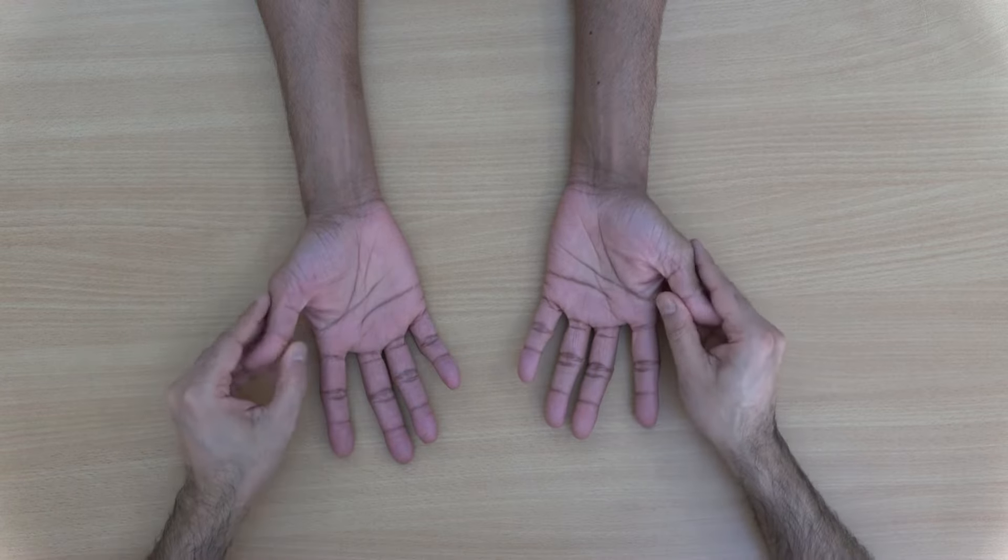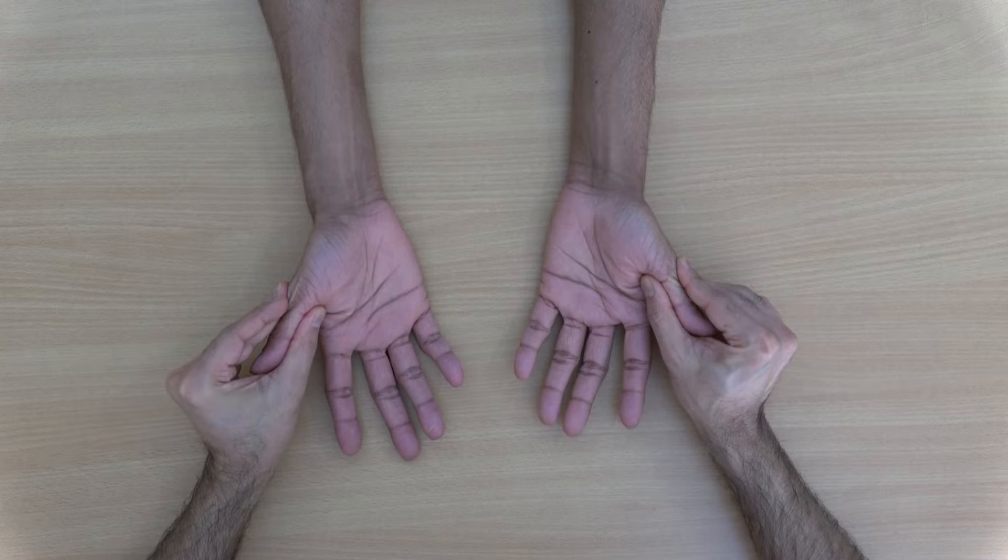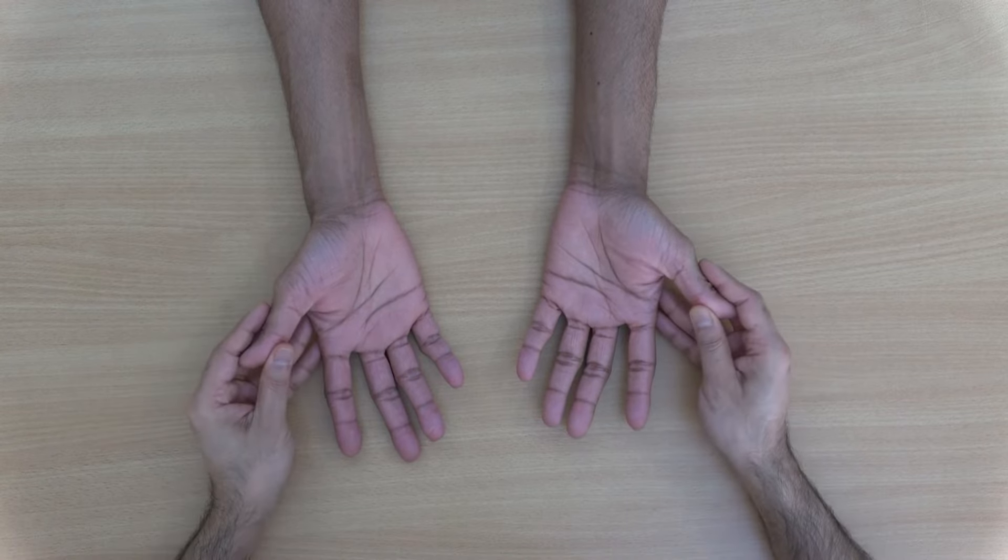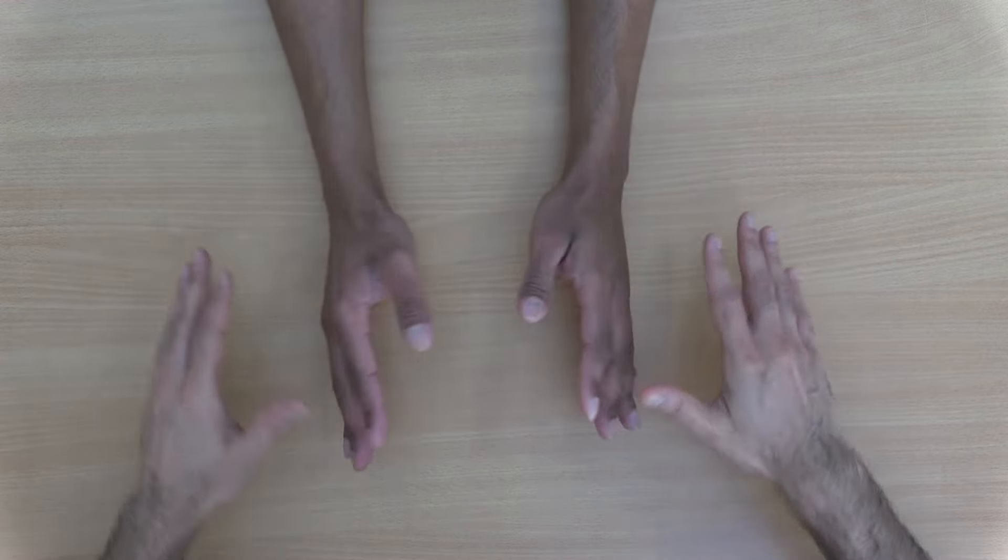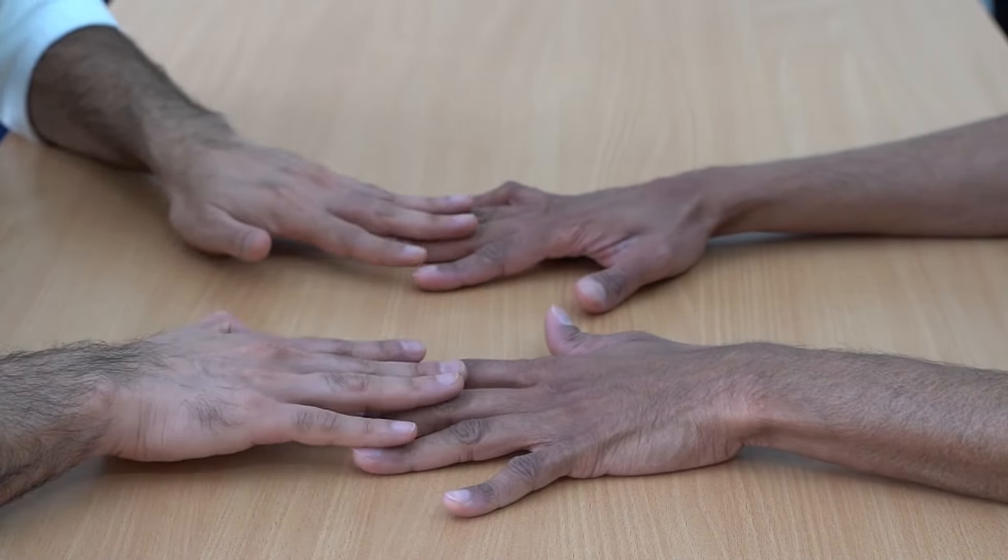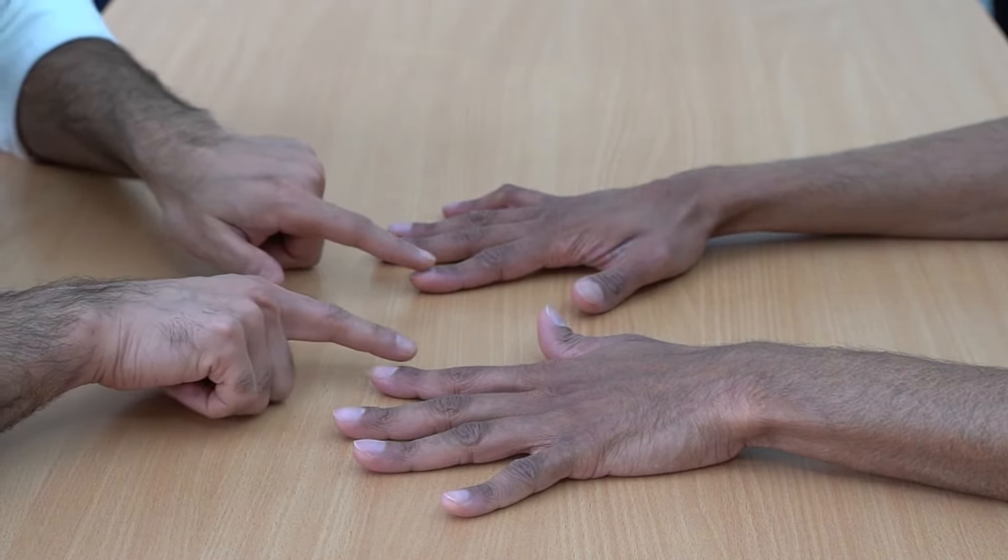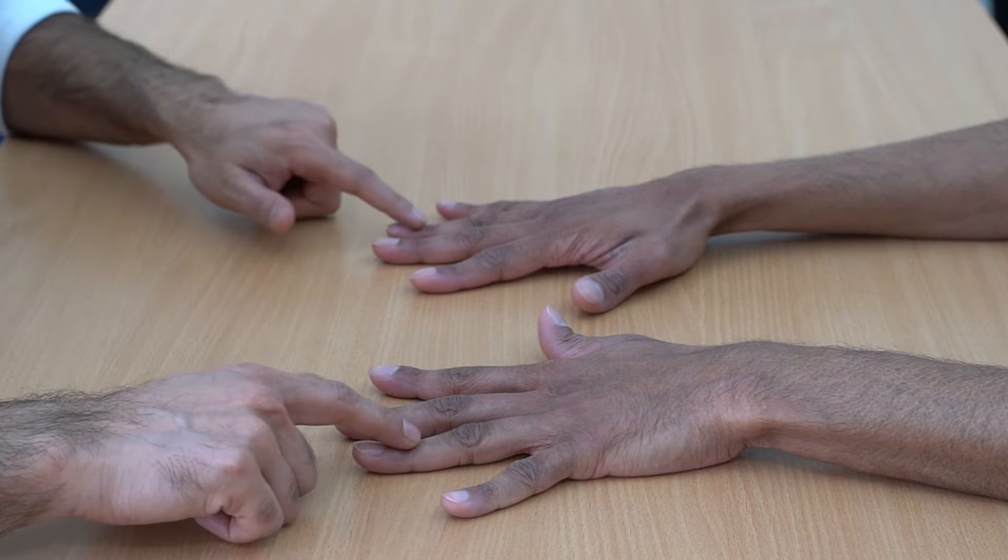We can also see subluxation or deformity in the thumb as we see in this picture. We ask the patient again to turn their hands over and from this side we can again see signs of arthritis in the DIP joints in the form of osteophytes.